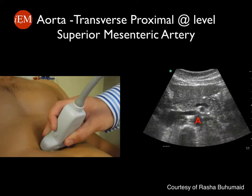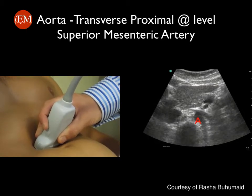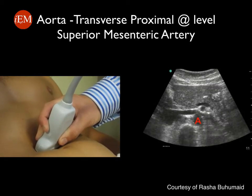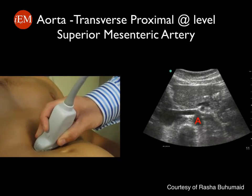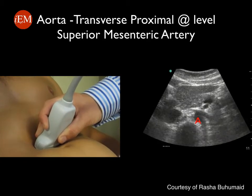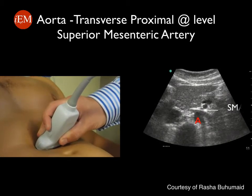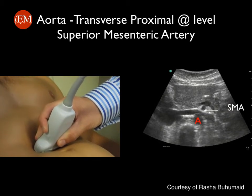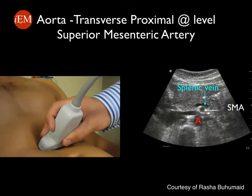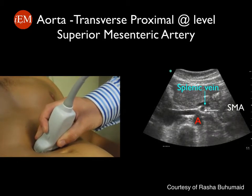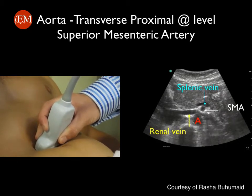Tracking the abdominal aorta more distally, at this level you can see the SMA — the superior mesenteric artery — running parallel to the abdominal aorta. You can also sometimes see the splenic vein running on top of the superior mesenteric artery, as well as the renal vein.